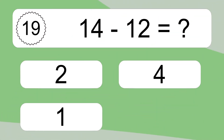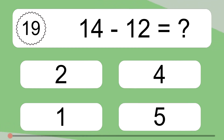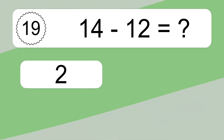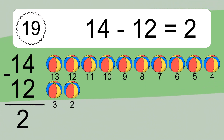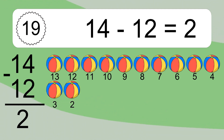14 minus 12 equals what? 14 minus 12 equals 2. Let's count it: 13, 12, 11, 10, 9, 8, 7, 6, 5, 4, 3, 2.